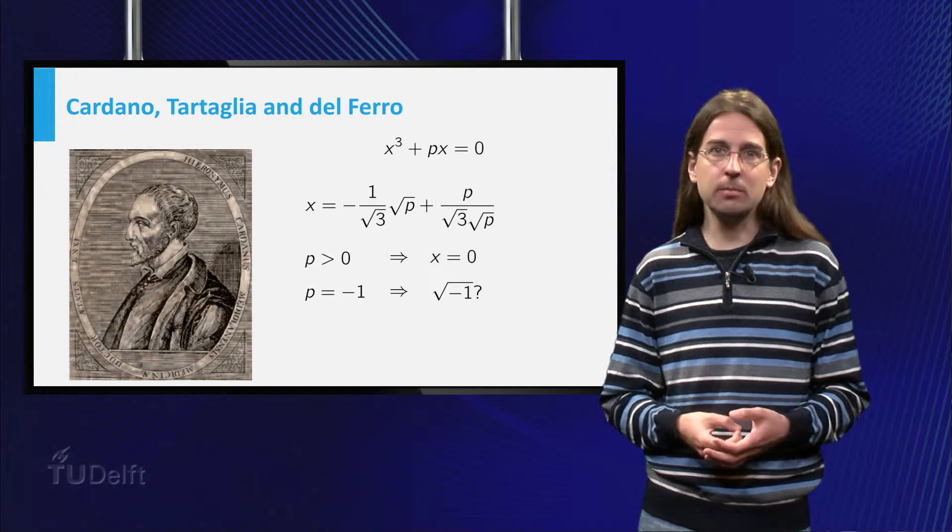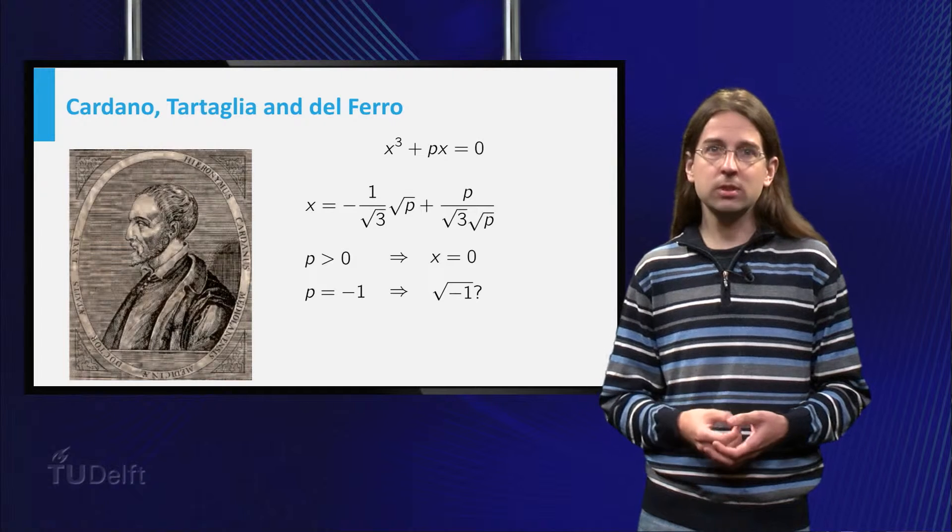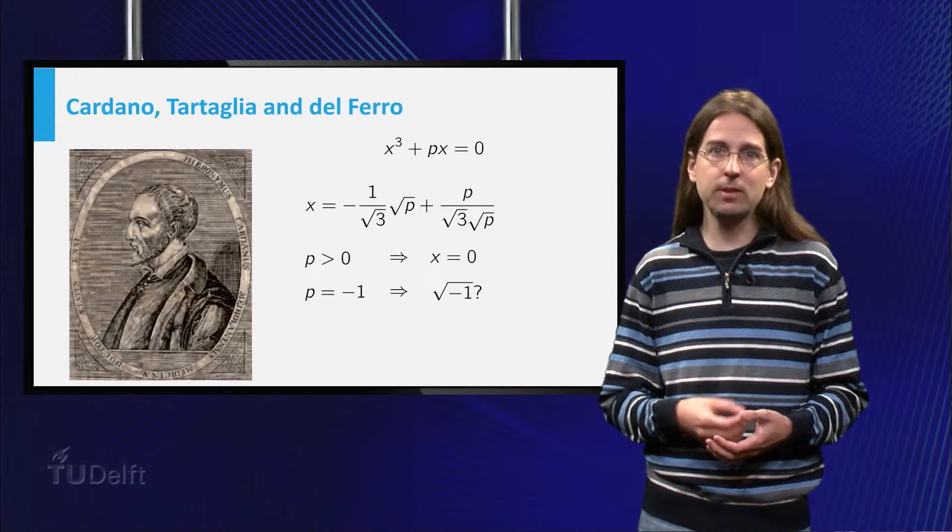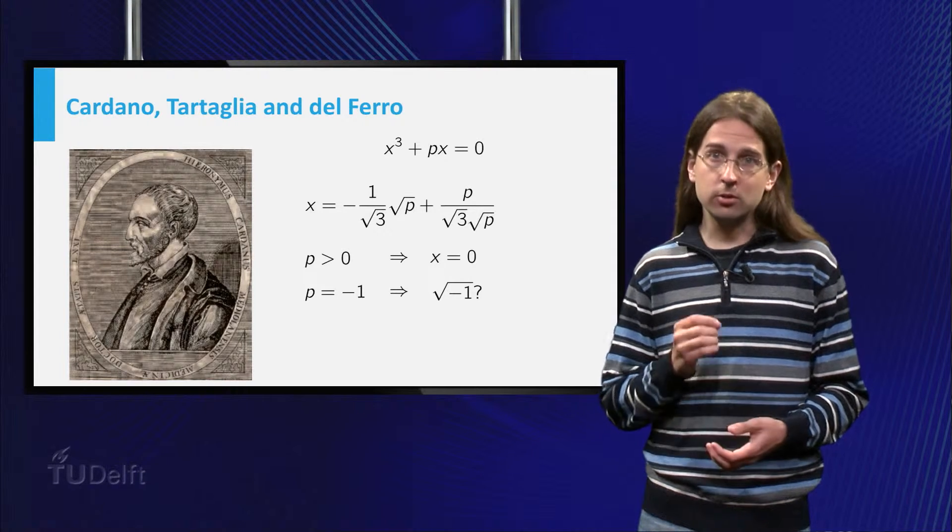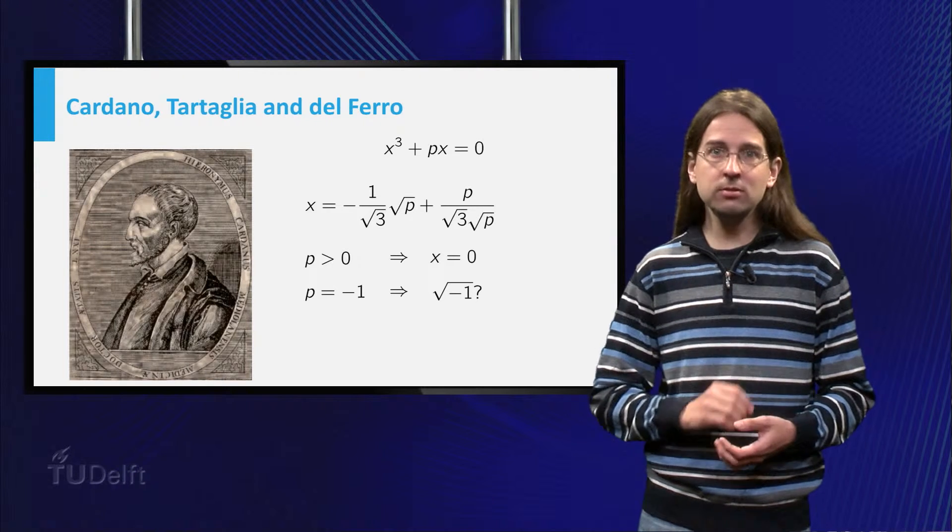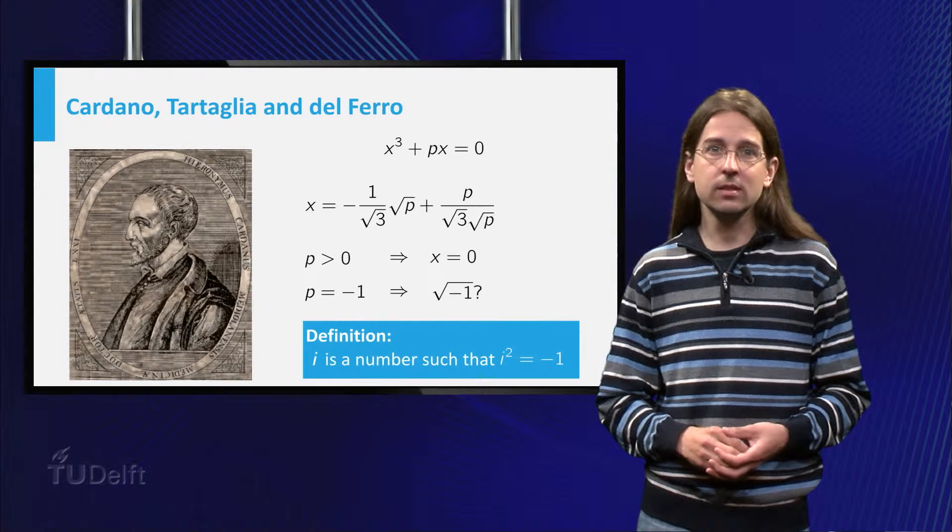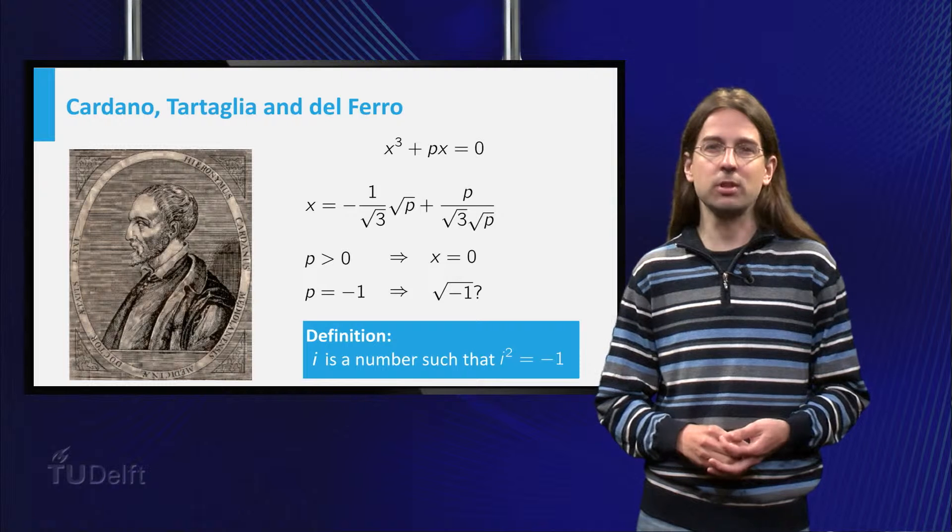This video is about complex numbers, numbers which involve square roots of negative numbers. It turns out the only extra number you need is i, whose square equals minus one.